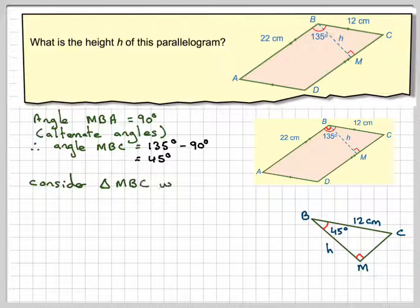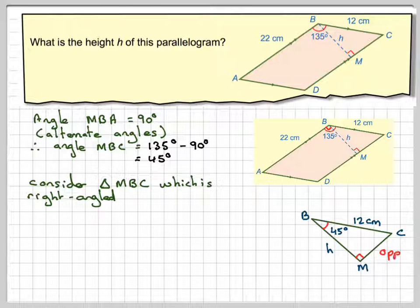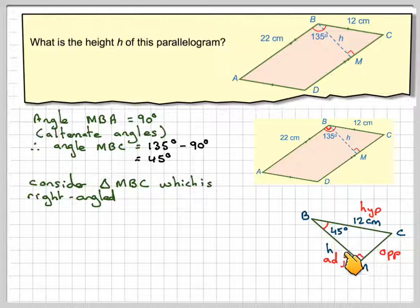So the first thing we should do is consider the triangle, which we know to be right angled. Label the sides. This is opposite, this is adjacent, and this is hypotenuse.